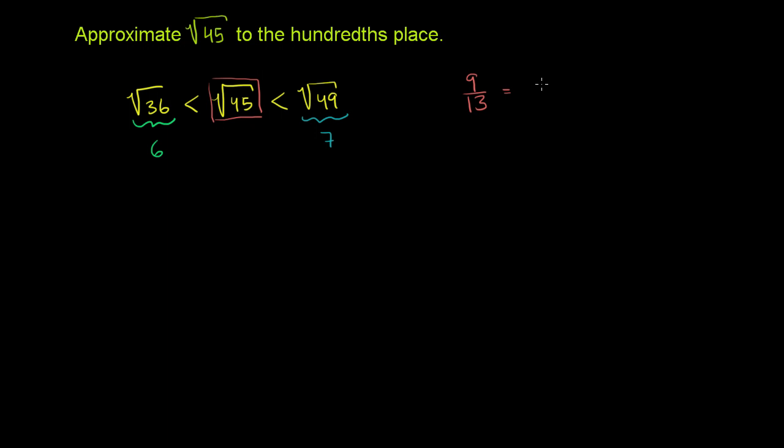So 9 thirteenths as a decimal is going to be what? It's going to be 13 into 9. We're going to put some decimal places right over here. Thirteen doesn't go into 9, but 13 does go into 90. And it goes into 90, let's see, does it go into it 7 times? It goes into it 6 times. So 6 times 3 is 18. 6 times 1 is 6, plus 1 is 7. And then you subtract. You get 12. So it went into it almost exactly 7 times. So this value right here is almost 0.7. And so if you say, how many times does 13 go into 120? It looks like it's like 9 times. Yeah, it would go into it 9 times. 9 times 3 is 27. 9 times 1 is 9, plus 2 is 11. You have a remainder of 3. So you get, it's about 0.69.